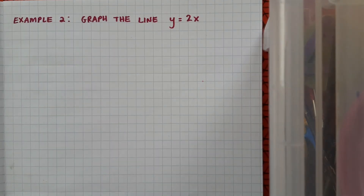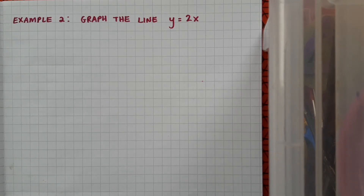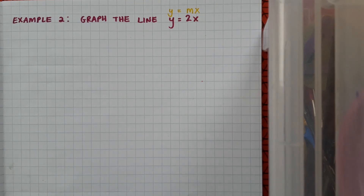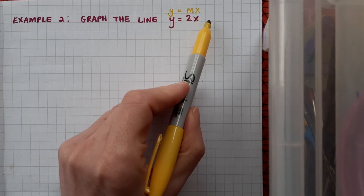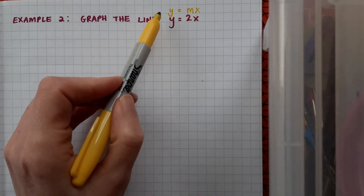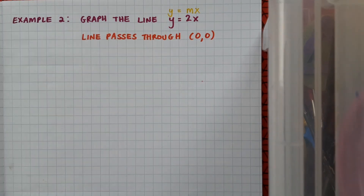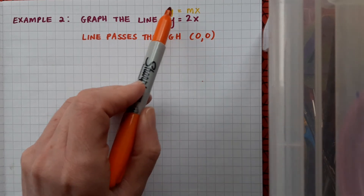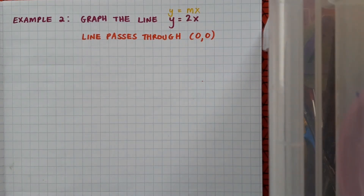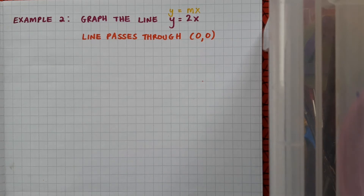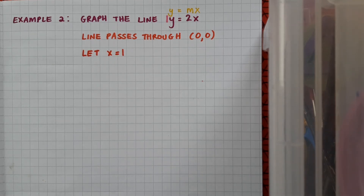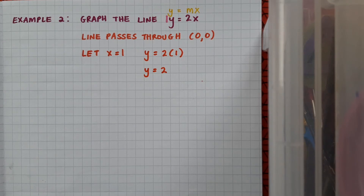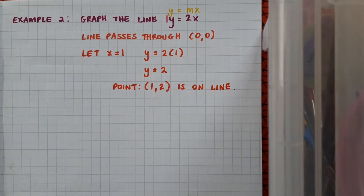Here's a second example. This time I want to graph the line y equals 2x. The first thing I'll do is look at the format of my equation. I can see it's written in the form y equals mx — you can think of the plus c being 0. Since I have no constant, I know this line goes through the origin. To find a second point, I'll identify the coefficient of y, which is 1, and substitute that in for x. Letting x equal 1, y equals 2 times 1, so y equals 2. So the point (1, 2) is on that line.